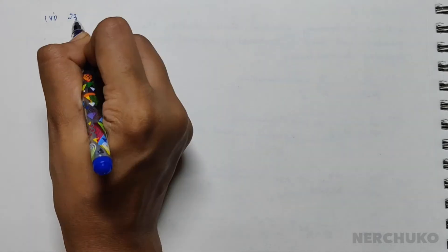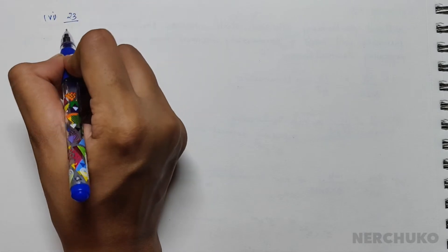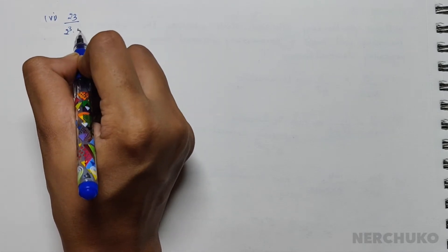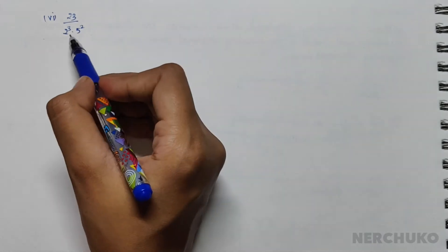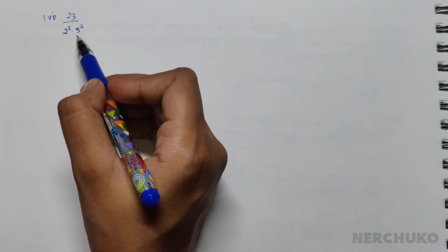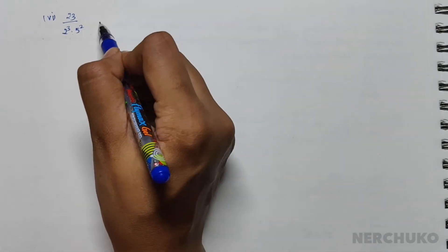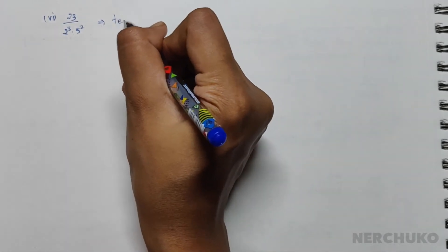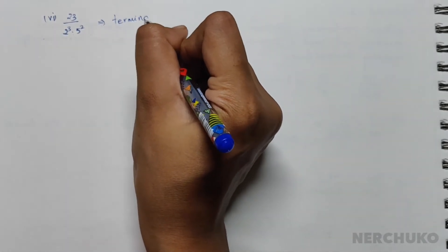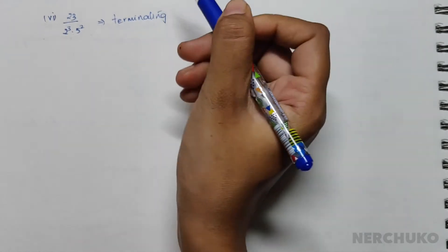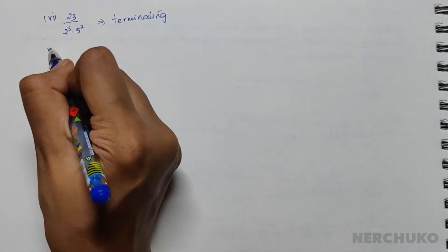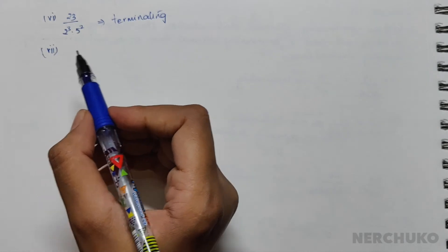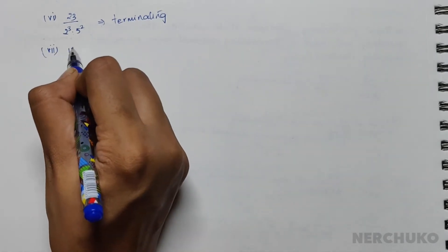For the sixth bit, we have 23 divided by 2 cubed × 5 squared. Since the denominator is already given in the form of 2^n × 5^m, it is a terminating decimal.